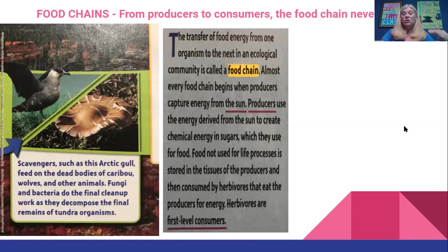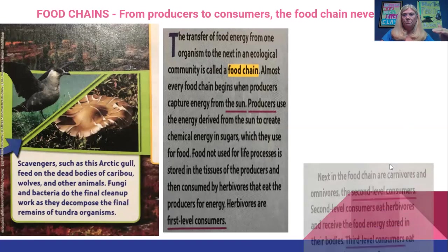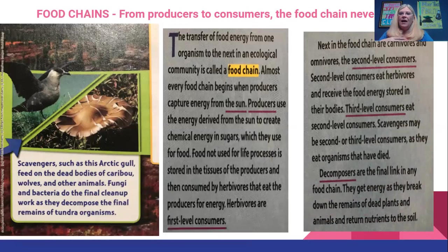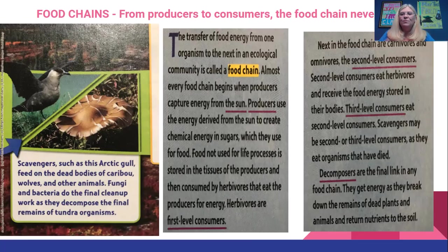Herbivores are considered first level consumers. Next in the food chain are carnivores and omnivores — the second level consumers. Second level consumers eat the herbivores and receive the food energy stored in those bodies. Third level consumers eat second level consumers. Scavengers can be at the second or third level because they eat any organism that has died. Decomposers are the final step — they get energy by breaking down the remains of dead plants and animals and returning nutrients to the soil.